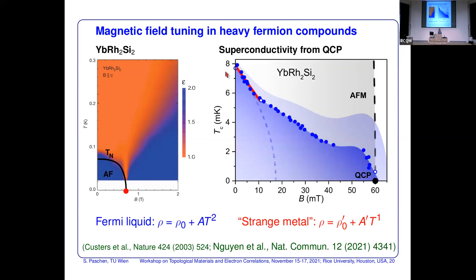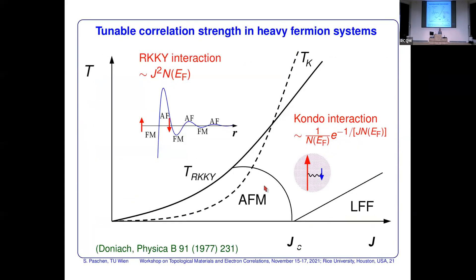A recent highlight from this quantum criticality work is the discovery of a very interesting superconducting phase with superconductivity boosted at a quantum critical point, probed below 8 mK. But let's return to topology. In simple terms, the key physics is competing interactions: in Kondo systems you have the Kondo interaction versus the RKKY interaction — the Kondo interaction leads to a paramagnetic state while RKKY leads to magnetism. Small variations of external parameters have large effects because you just need to tip the balance.